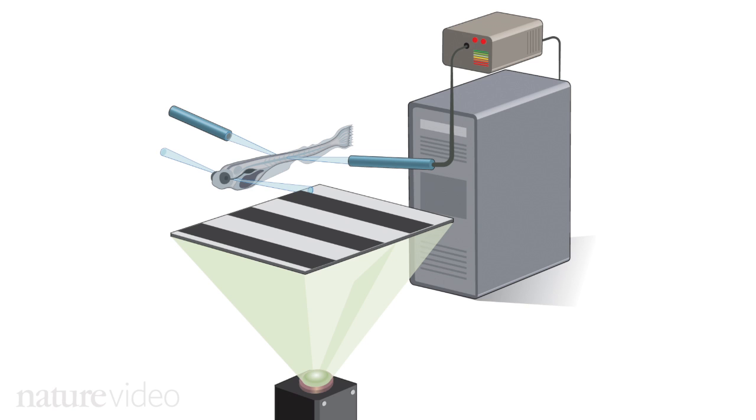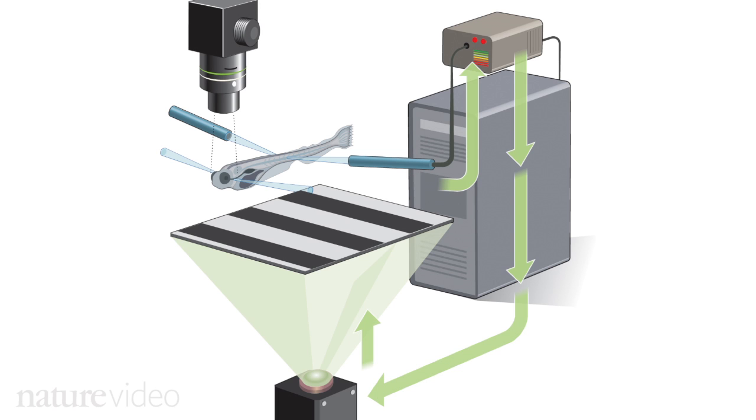When the projector is switched on, the fish tries to swim against the virtual current. It can't actually move, but its intention is recorded from the activity of its motor neurons. At the same time, the researchers watch to see which areas of the brain light up.